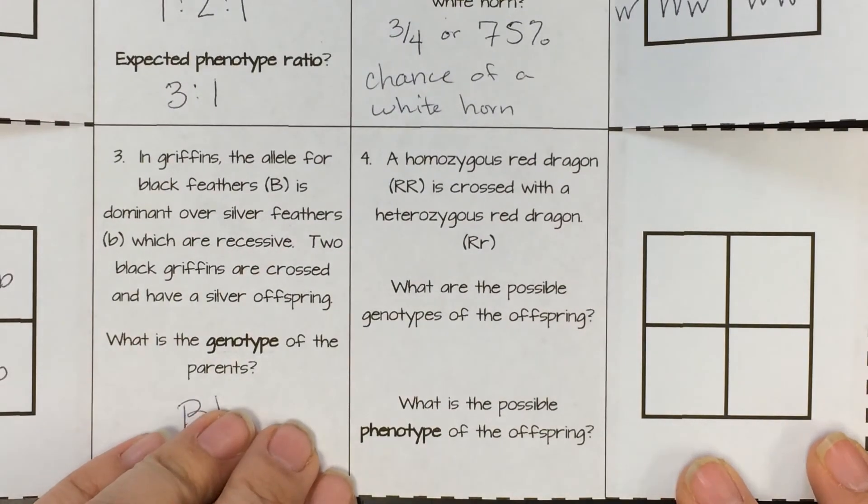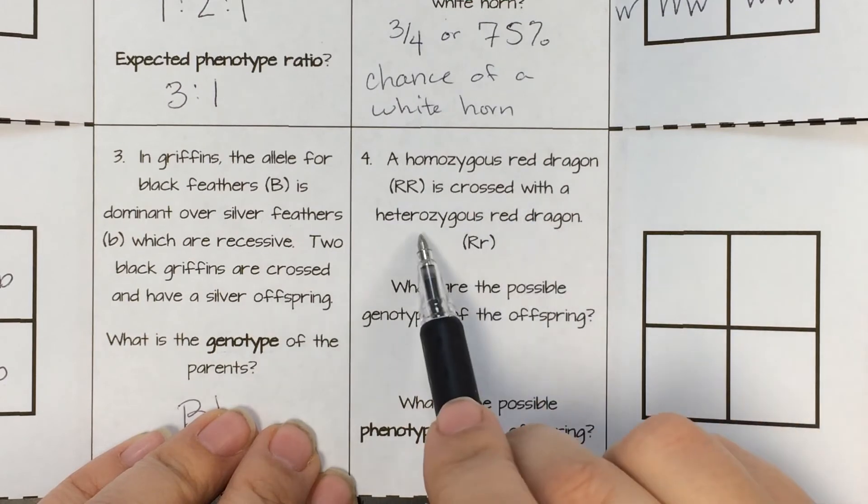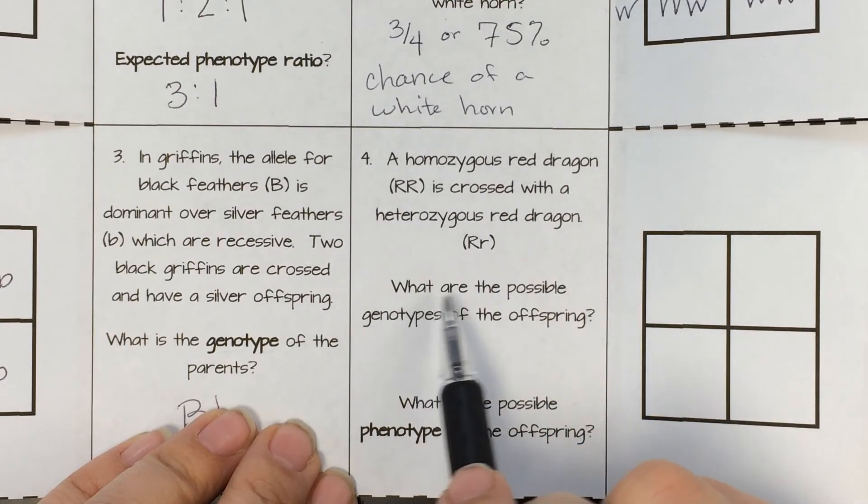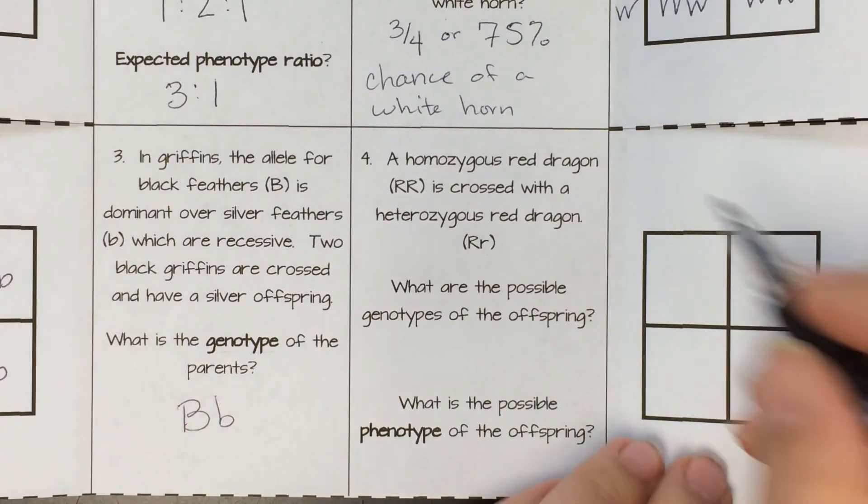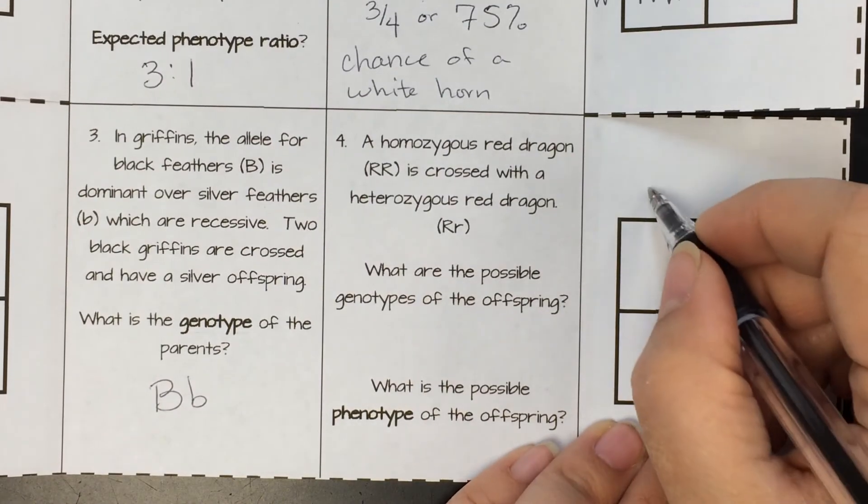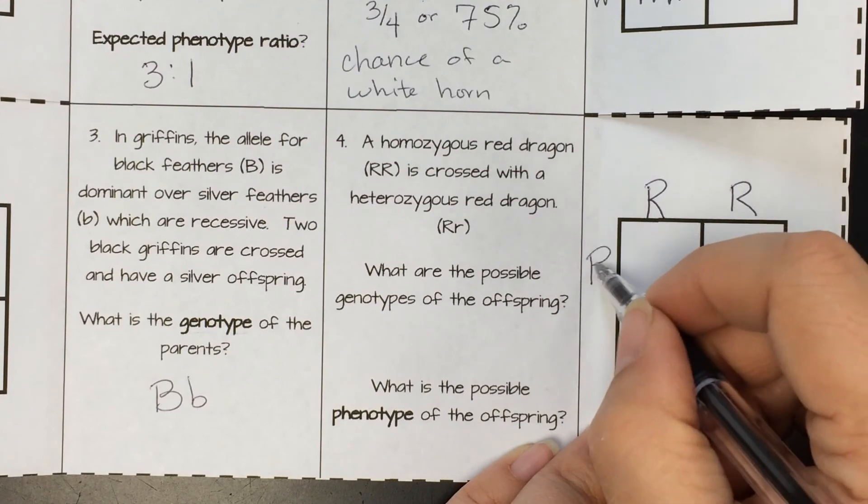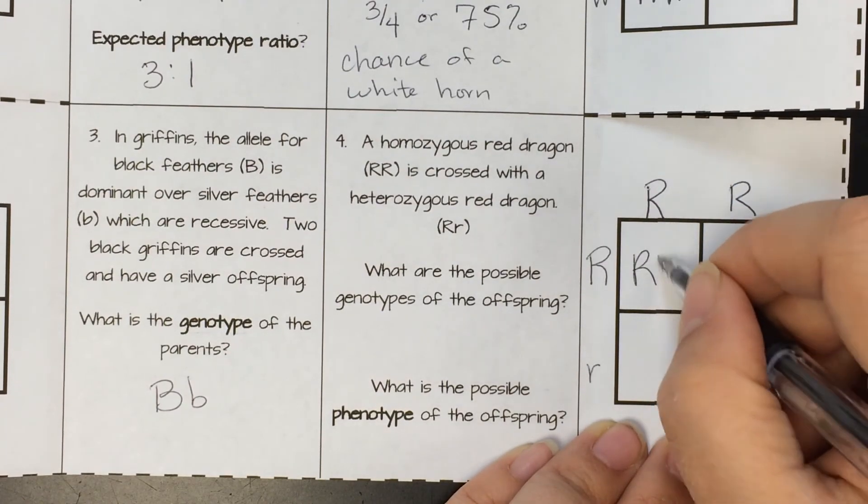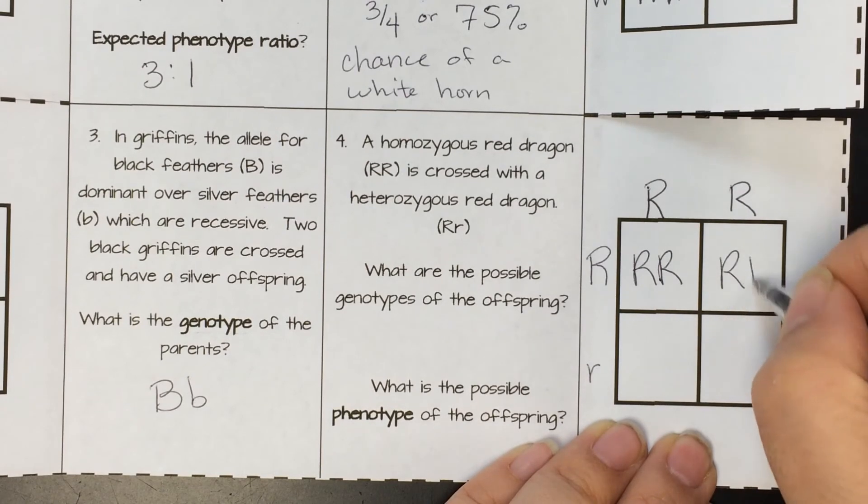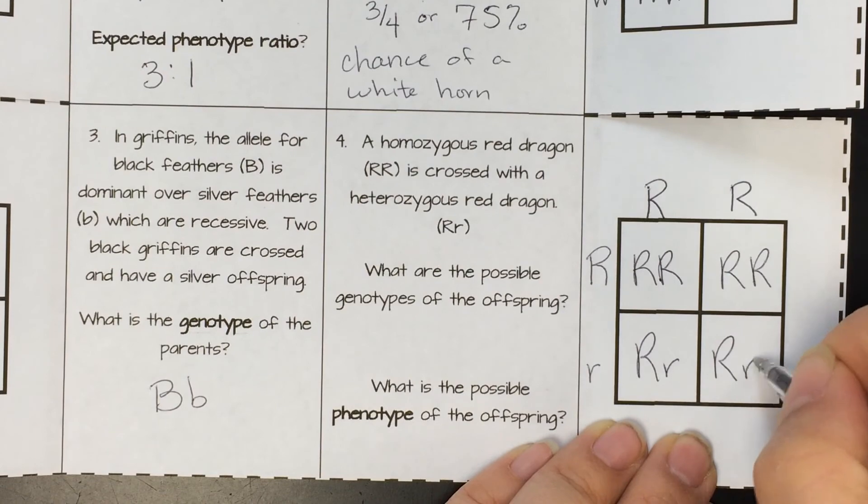And finally, number four, a homozygous red dragon, big R, big R, is crossed with a heterozygous red dragon, big R, little r. What are the possible genotypes of the offspring, and what is the possible phenotype of the offspring? So one parent we know is big R, big R. So we do big R, big R. And the other one is heterozygous, big R, little r. So if we work the Punnett, we'd have big big, big big, big little, and big little.